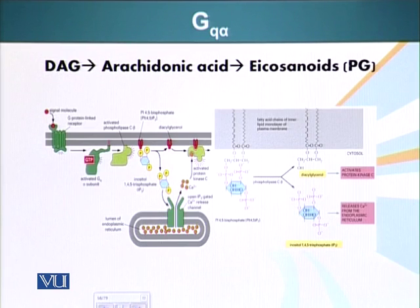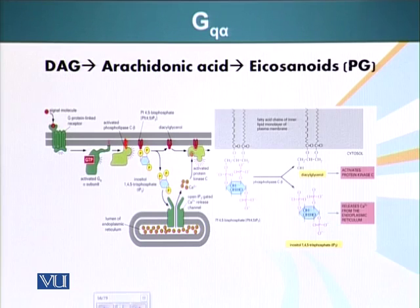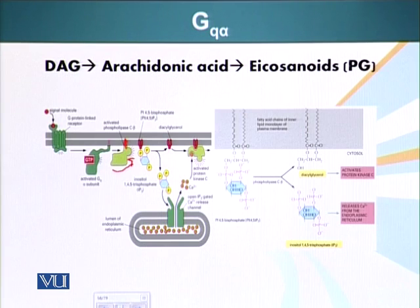Another type of G protein is GQ. The alpha subunit of GQ, rather than activating adenyl cyclase, activates another enzyme attached to the inner surface of the plasma membrane called phospholipase C. Once activated, phospholipase C cleaves a molecule of phosphatidylinositol bisphosphate.